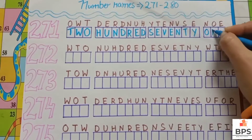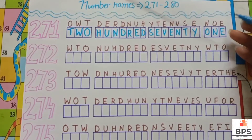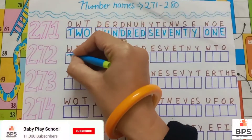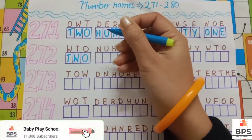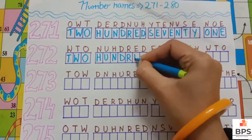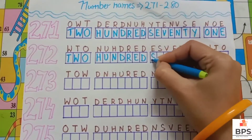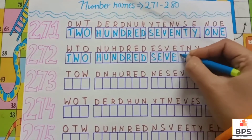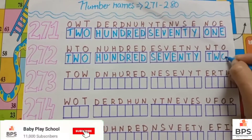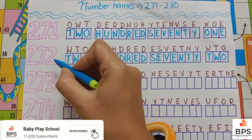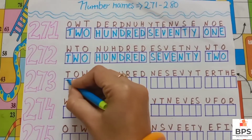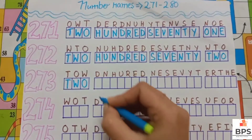O, N, E, 1. 271. 272: T, W, O, 2, H, U, N, D, R, E, D, 100, S, E, V, E, N, T, Y, 70, T, W, O, 2. 272.